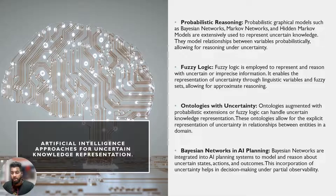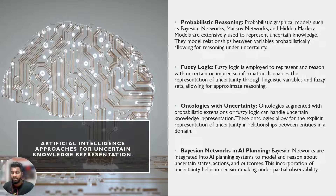Ontologies augmented with probabilistic extensions or fuzzy logic can handle uncertain knowledge representation. These ontologies allow for the explicit representation of uncertainty in relationships between entities in a domain. Bayesian networks are also integrated into AI planning systems to model and reason about uncertain states, actions, and outcomes. This incorporation of uncertainty helps in decision making under partial observability.